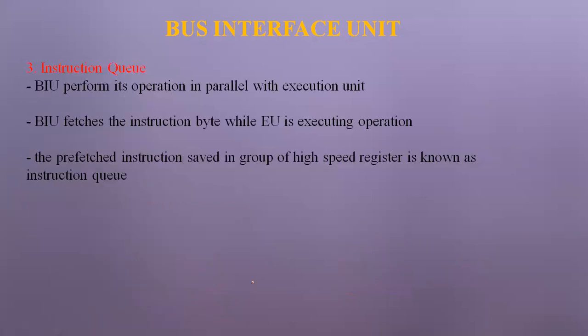The instruction queue allows the BIU to perform its operations in parallel with the Execution Unit. The microprocessor fetches instruction bytes while the execution unit is executing an operation. Pre-fetched instructions are saved in a group of high-speed registers known as the instruction queue.